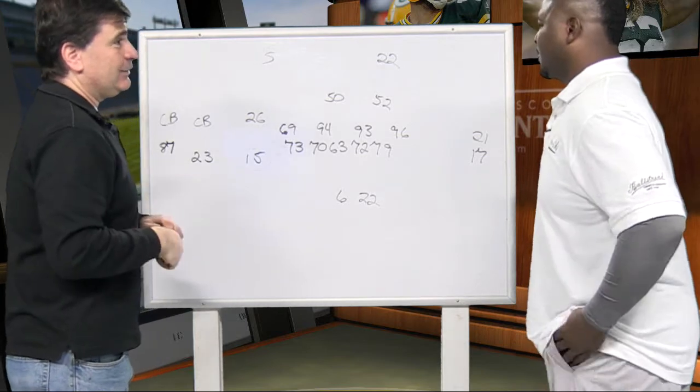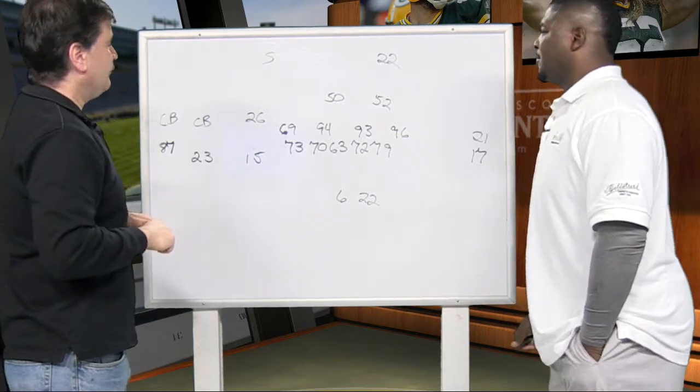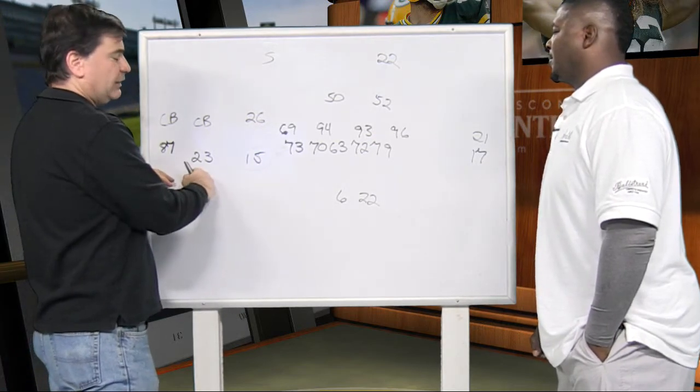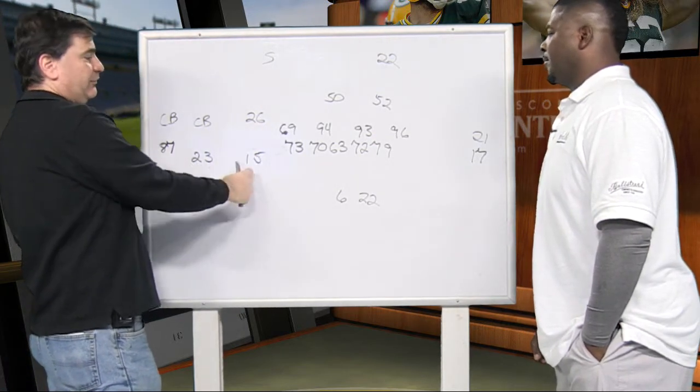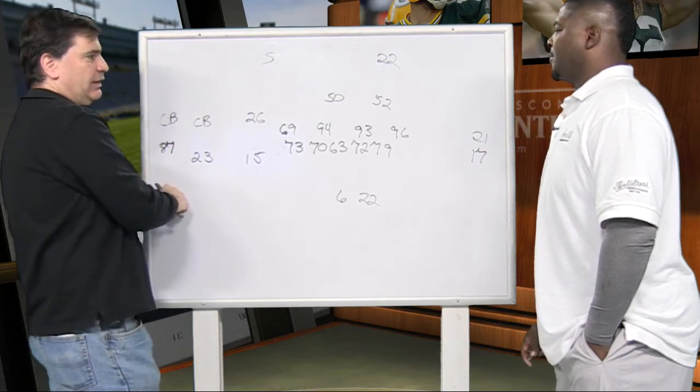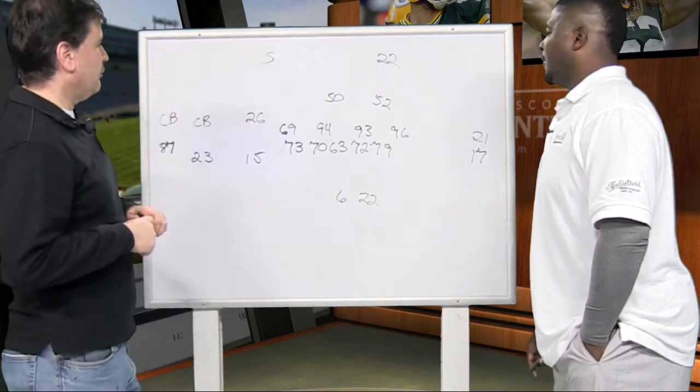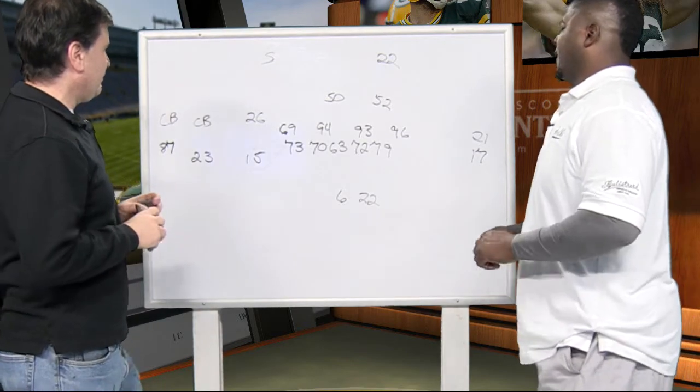Just like any good player does, just like a Calvin Johnson would do. So this is a set we saw with the Bears, call that three by one, three receivers on this side. This happens to be a tight end. And then one receiver over here. So why don't you show what exactly happens on this play?